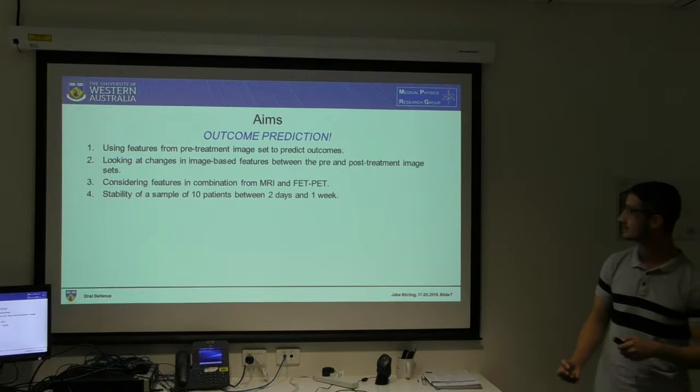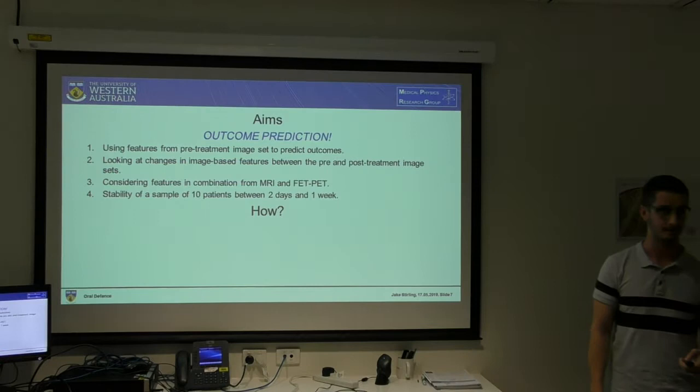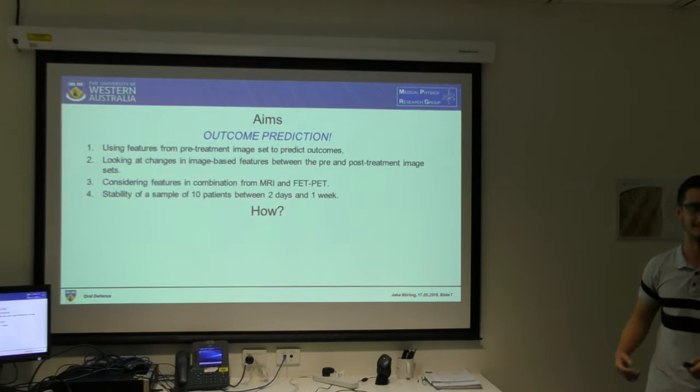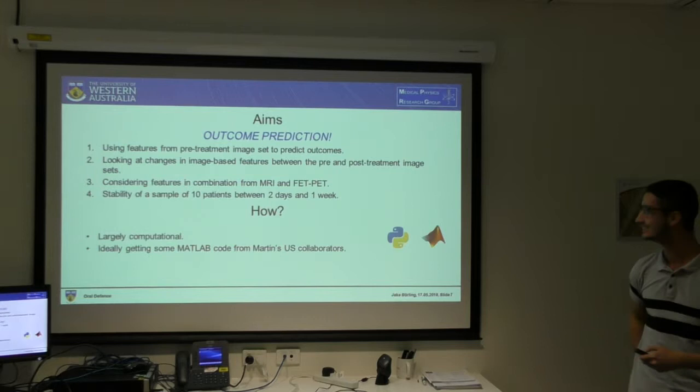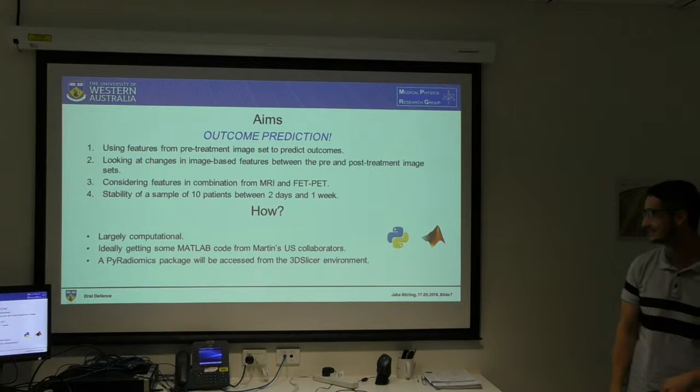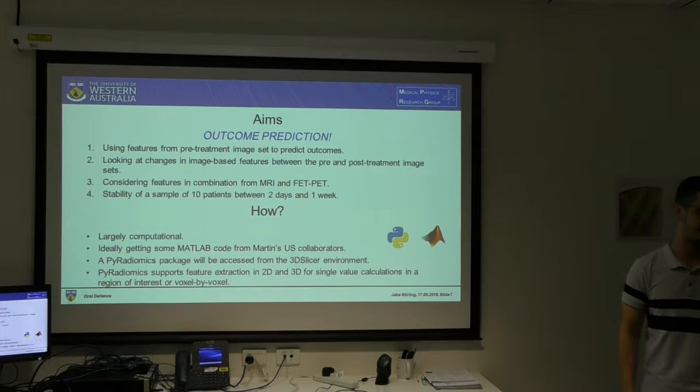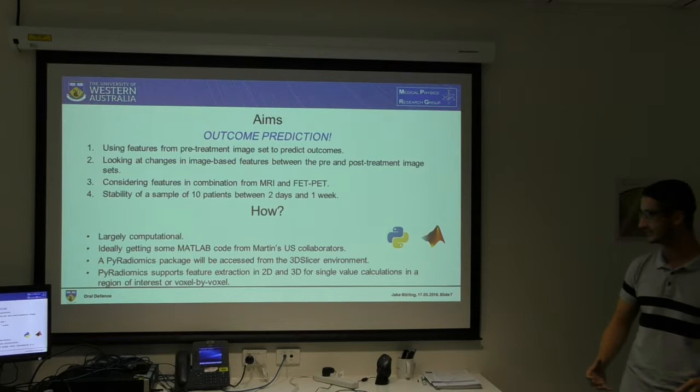How is this going to be done? It's essentially computational, which suits me because practically I'm incapable. We're waiting on Martin's US collaborators to get back with some MATLAB code. Otherwise it will be done using the PyRadiomics package from 3D Slicer in Python, which does all these feature extractions in 2D, 3D, voxel-by-voxel, or just in a region of interest.